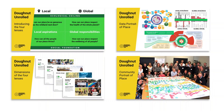So there you have it — an introduction to selecting targets and indicators across the four lenses of the donut unrolled portrait. Thanks so much for listening. Do check out the other videos in this series for inspiring examples from communities and cities who are using this data-led tool, adapted to their own context, together with other tools that have been created to put the concepts of donut economics into action.